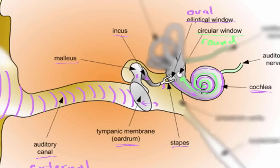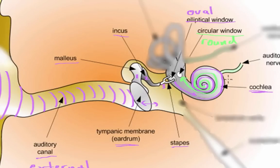This keeps happening — fluid moves all the way to the tip of the cochlea and back, back and forth, until the energy of the sound wave dissipates and the fluid stops moving. Meanwhile, hair cells inside the cochlea are being pushed back and forth, and this transmits an electrical impulse via the auditory nerve to the brain.